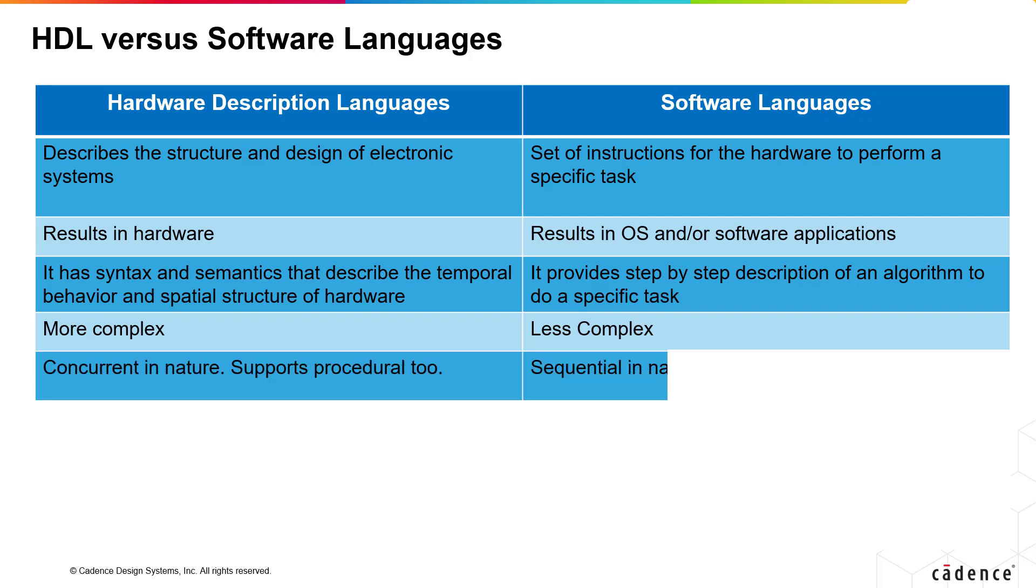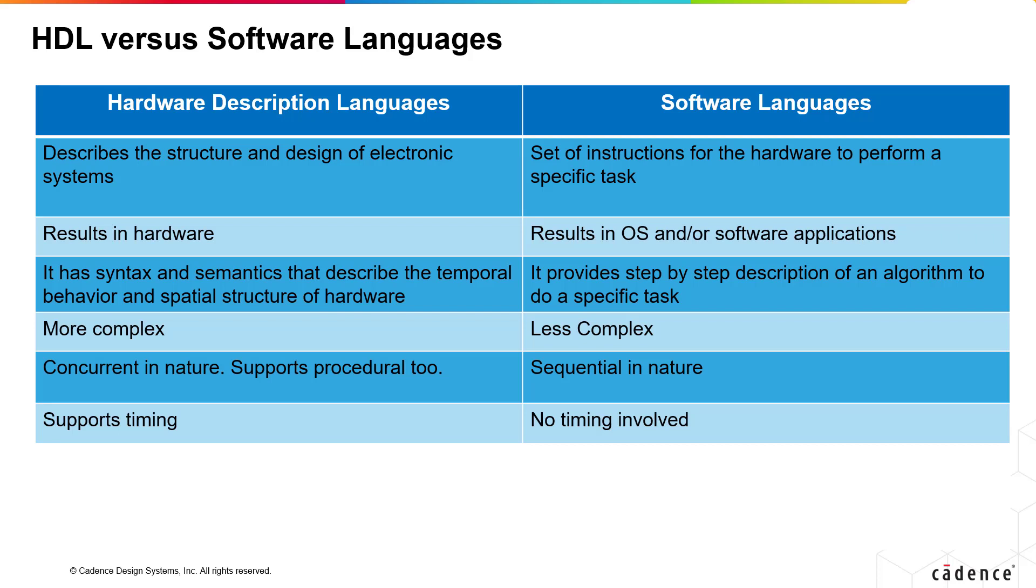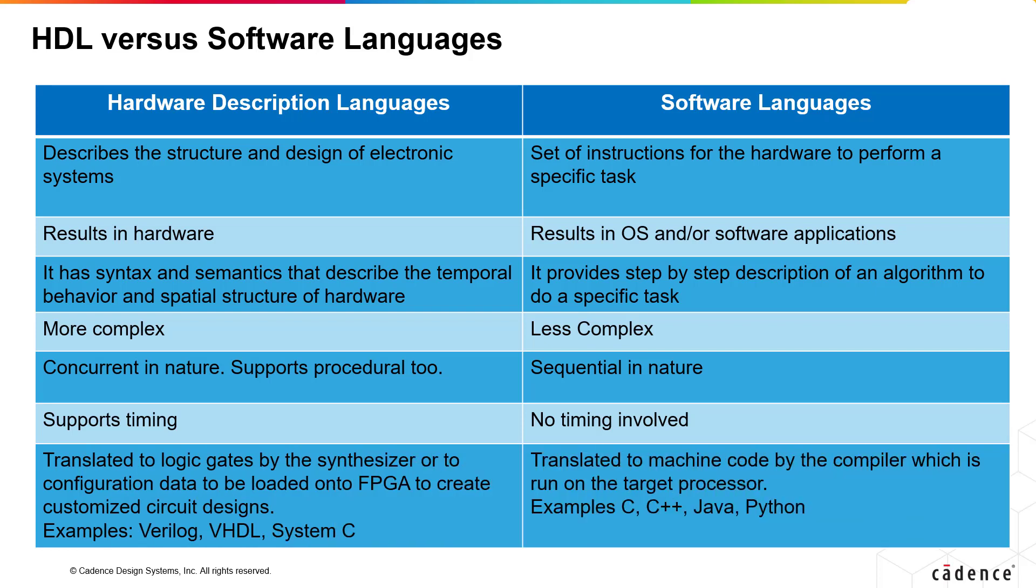HDL is concurrent in nature. It supports procedural too, whereas software languages are purely sequential in nature and support timing. No timing concepts are involved in software languages. Code gets translated to logic gates by the synthesizer or to configuration data that is to be loaded onto FPGAs to create customized circuit design. Examples include Verilog, VHDL and more recently, System C.